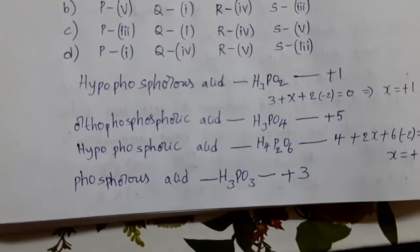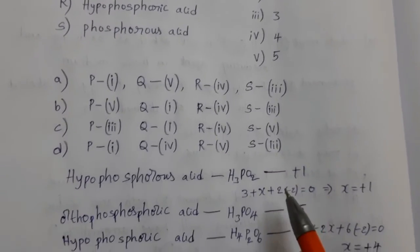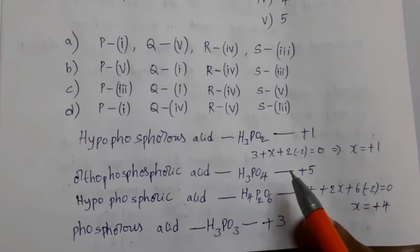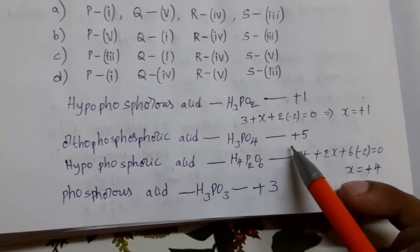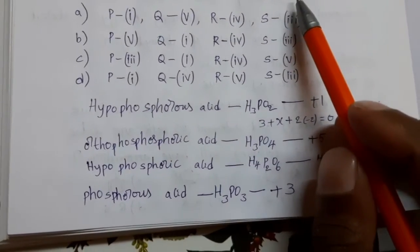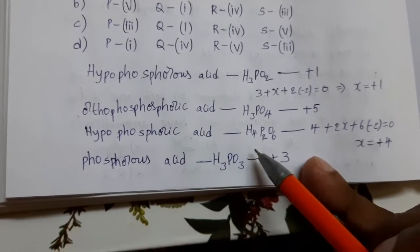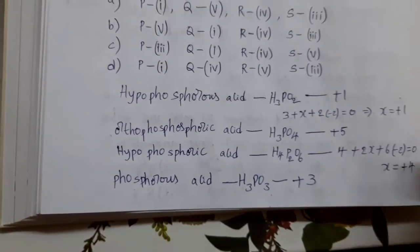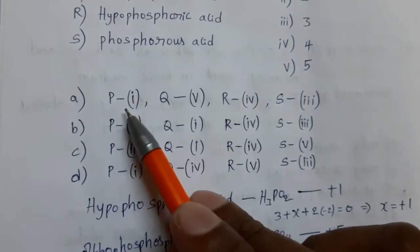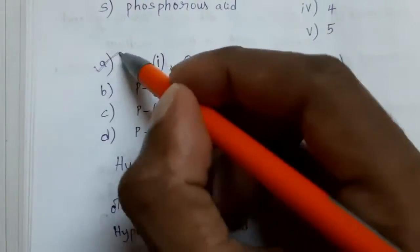Now, what is the correct option? P1, Q5, R4, S3. Then what is the correct option for this? Option A. Check it. P1, Q5, R4, S3. Option A is the answer.